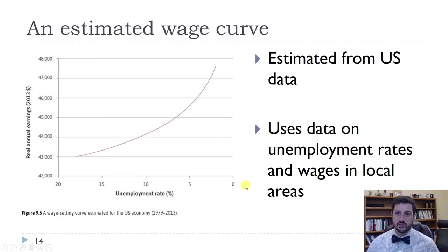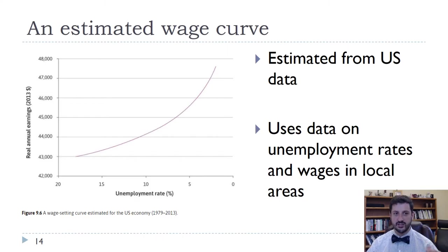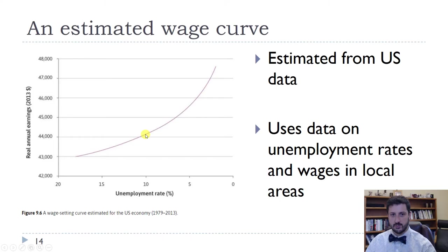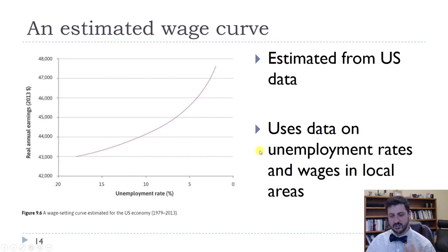This is an estimated wage curve from U.S. data going from 1979 to 2013. It takes a weighted average of many different places in the country and adjusts for inflation to 2013 dollars. The unemployment rate goes from zero on the right to 20% on the left. The highest national unemployment rate in this period was about 11% in the early 1980s, but locally we've had higher rates, so we can estimate that portion of the curve. The result is an upward-sloping wage setting curve, just like in the model, giving us more confidence this is a reasonable model.